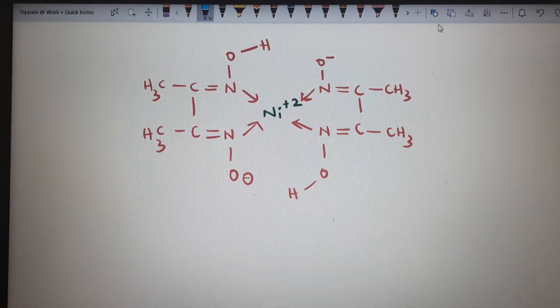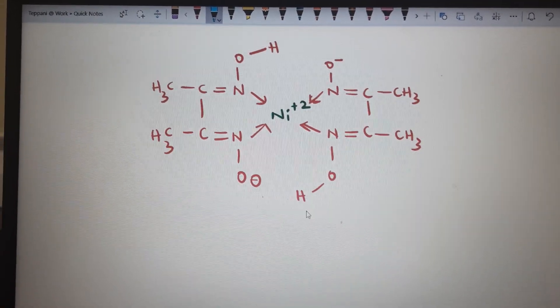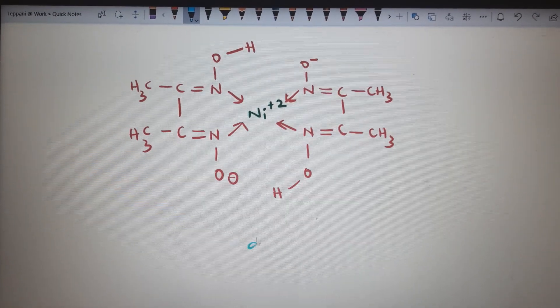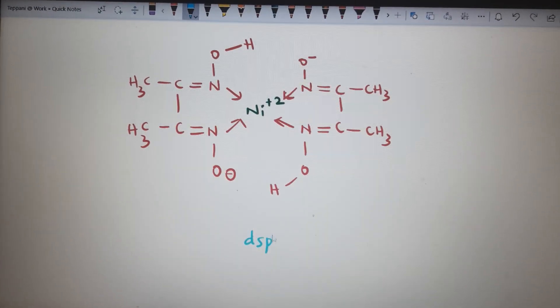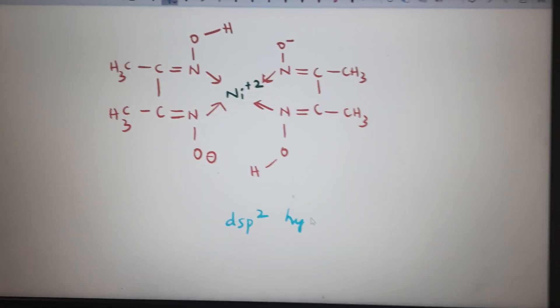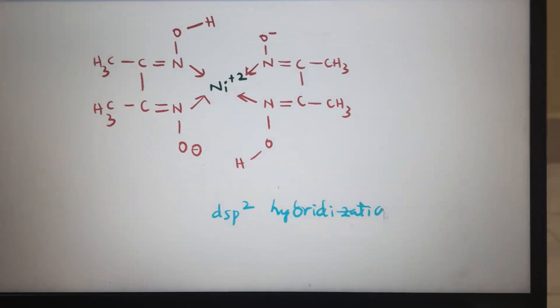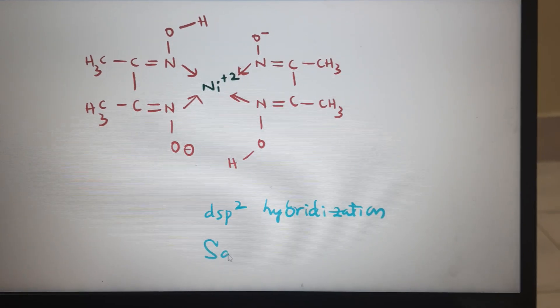Nickel DMG complex: here nickel +2 is having dsp2 hybridization, and it is a square planar complex.